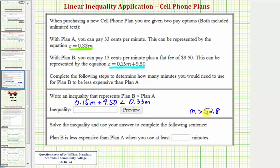But of course we cannot use a fraction of a minute. Minutes should always be rounded up, and therefore we'll say that plan B is less expensive than plan A when you use at least 53 minutes.